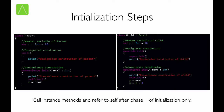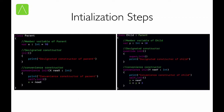Calling instance methods and referring to self only after phase 1 of initialization — in the example we've taken, we do not have any situation where this happens, so it would be difficult to demonstrate this. And that's how the initialization process works in Swift. The only point to note is that since structs do not allow inheritance, there is no parent to delegate to. Other than that, everything is the same for structs.